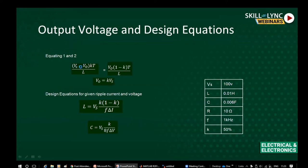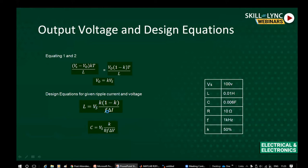Equating Equations 1 and 2: (Vs − V_out) × kT / L = V_out × (1−k) × T / L, from which we get the average output voltage V_out = k × Vs. Using the ripple current expression, we can also find design equations for the L and C filter components. The filter inductor value depends on the ripple current, and the filter capacitor value depends on the ripple voltage.